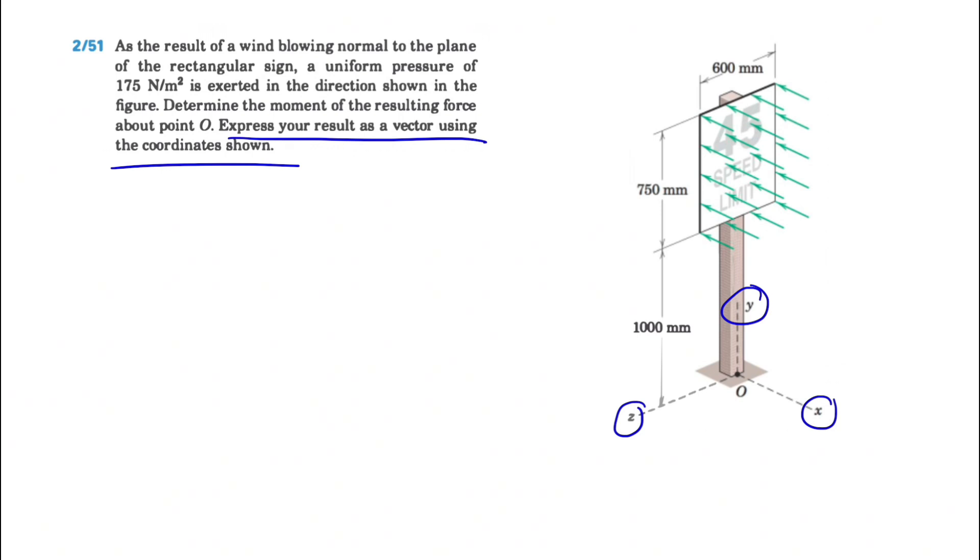First of all, we have to figure out the force. We know the force is 175 Newtons per meter squared. If we multiply this by the dimensions of the sign, which is basically 600 millimeters by 750 millimeters, or 0.6 meters times 0.75 meters, the force that we can find will be 78.75 Newtons.